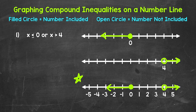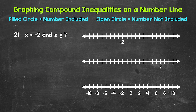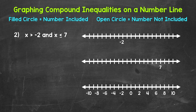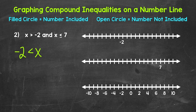Let's move on to number two where we will have an and compound inequality. We have x is greater than negative two and x is less than or equal to seven. A solution of a compound inequality involving and must make both inequalities true. And compound inequalities can be written without the word and — x goes in the middle: x is greater than negative two and less than or equal to seven.